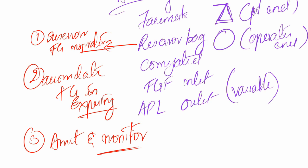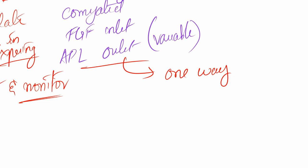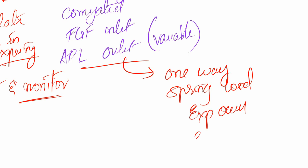By pressing the reservoir bag you can actually assist respiration. The APL valve is one-way — it only opens — and it is spring-loaded, so the spring determines the pressure the APL valve exerts. Expiration occurs when the expiration pressure is greater than the spring pressure.